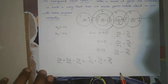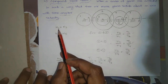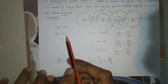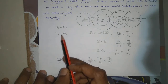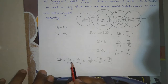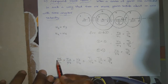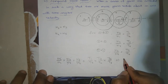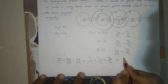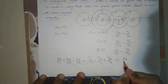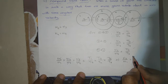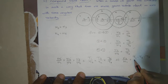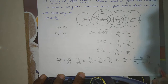Since gears on common shafts have equal speeds — n2 equals n3 and n4 equals n5 — we can cancel n2 with n3 and n4 with n5. Finally, the train value is: n6 by n1 is equal to (t1 × t3 × t5) divided by (t2 × t4 × t6).